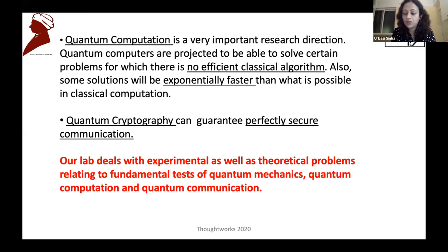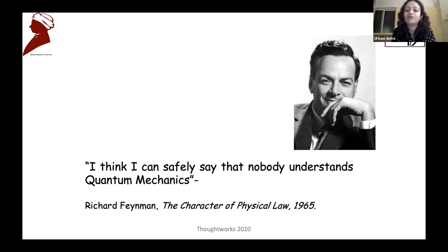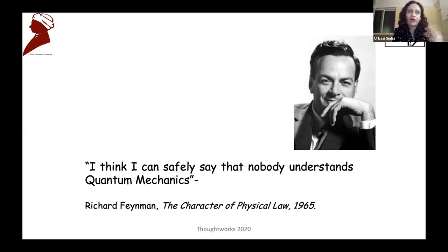A little bit about the history of the subject — Richard Feynman very famously said, 'I think I can safely say that nobody understands quantum mechanics,' in 1965. In 2020, we can say that nobody completely understands quantum mechanics, though we do understand a little bit more in the last 55 years. Every step there is a possible surprise requiring a completely new explanation, which keeps this field very vibrant.